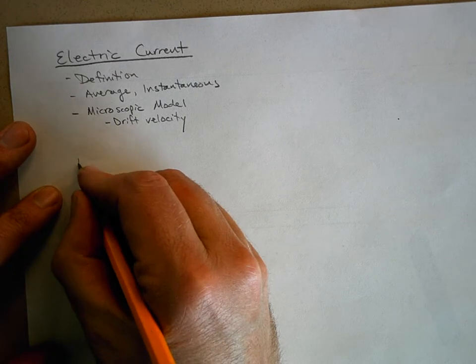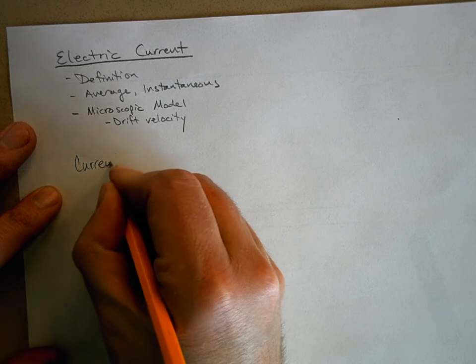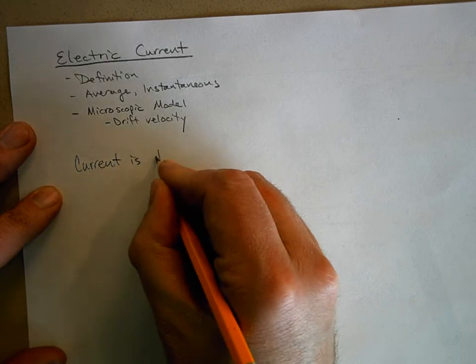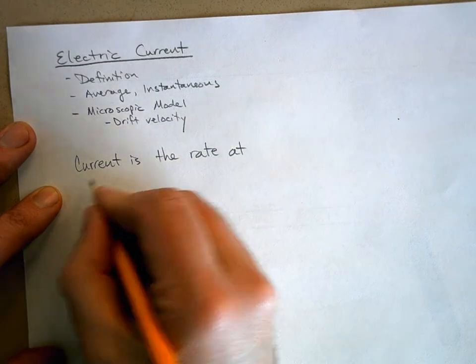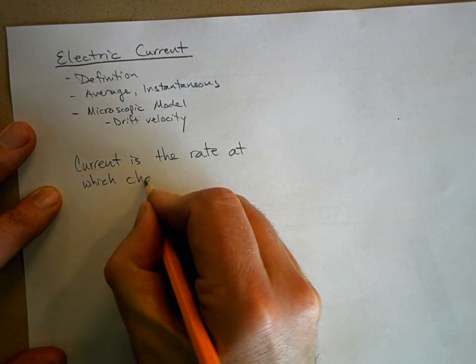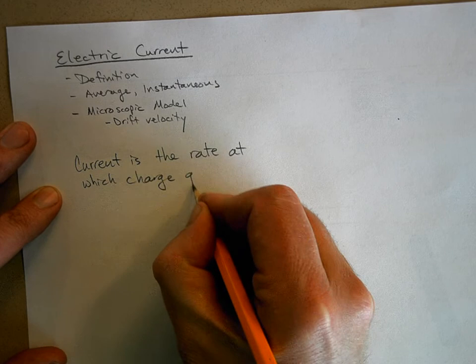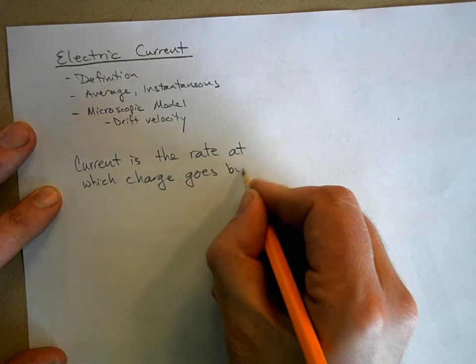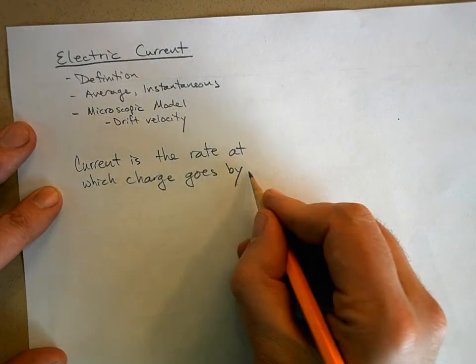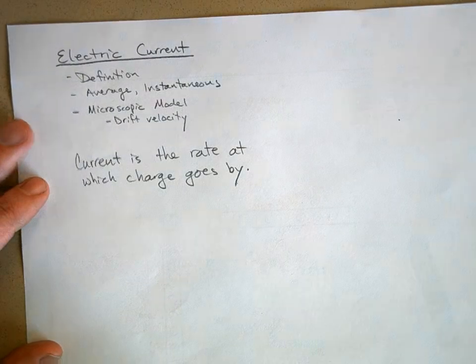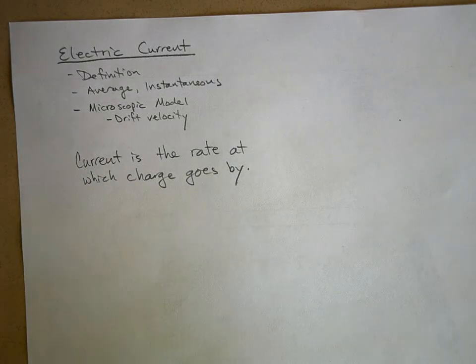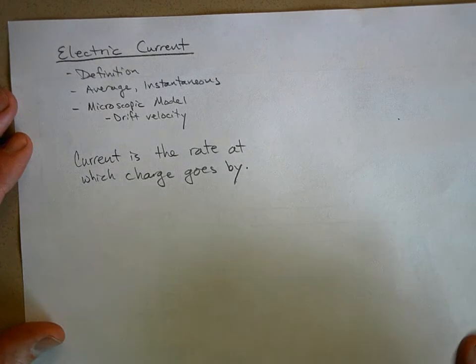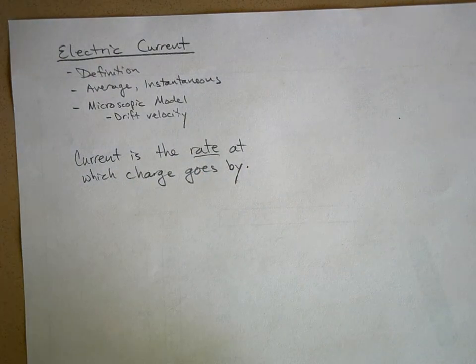So here's how we define current. Current is the rate at which charge goes by. It's the rate, how much charge is going by every second. It's a rate, so it's related to time.